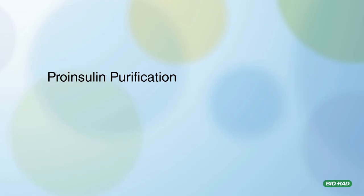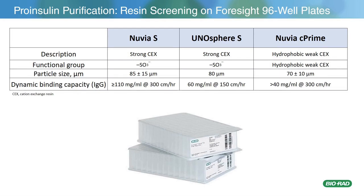Let's talk about the proinsulin purification. Cation exchange resins are commonly used in proinsulin purification because of their high binding capacity and high flexibility in scaling up. Three resins were chosen for this evaluation: Nuvia-S, Unisphere-S, and Nuvia-C Prime. High-throughput screening was done on 20-microliter 96-well plates to evaluate binding capacity, determine optimal loading conditions, and scout for elution conditions. The table lists the properties of each of the three resins.